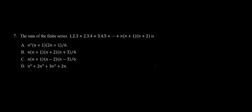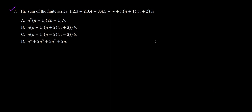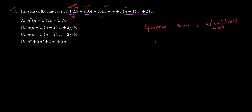Question 7 asks for the sum of the finite series 1·2·3 + 2·3·4 + 3·... up to n(n+1)(n+2). We need to find the sum of this series where each term has three numbers multiplied in the format n(n+1)(n+2), where n starts from 1. Let us write the general term: assuming the first term is k, the general term is k(k+1)(k+2).